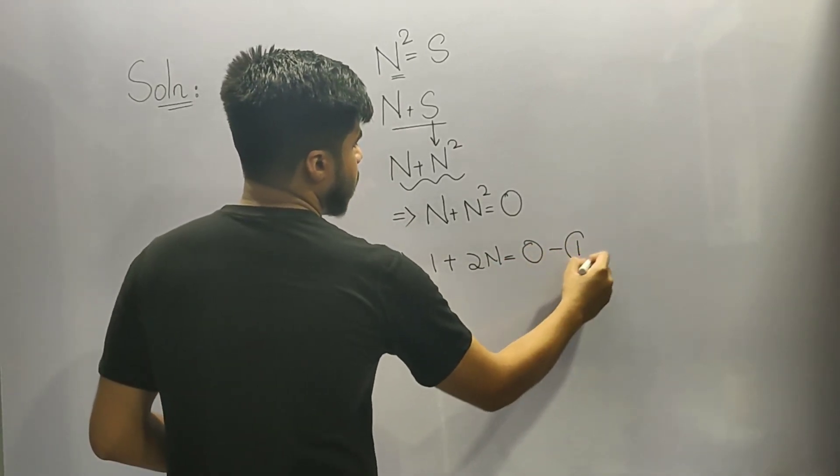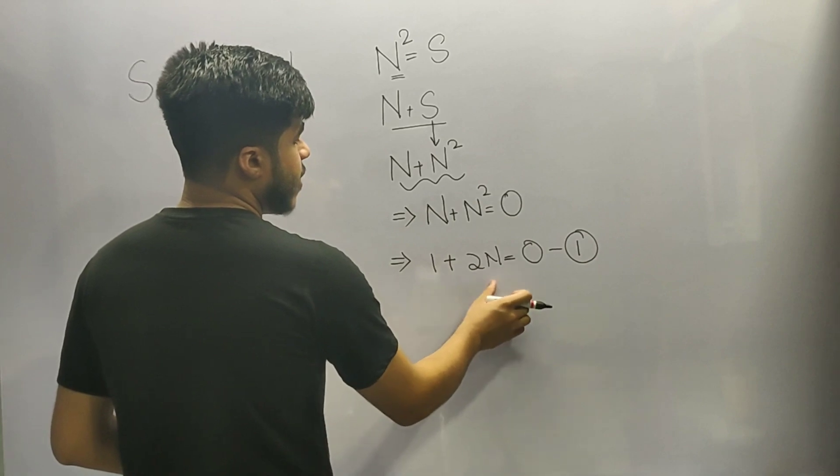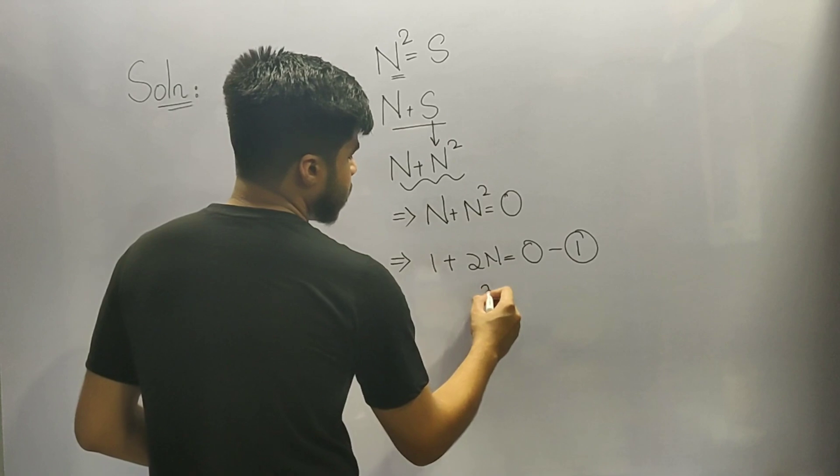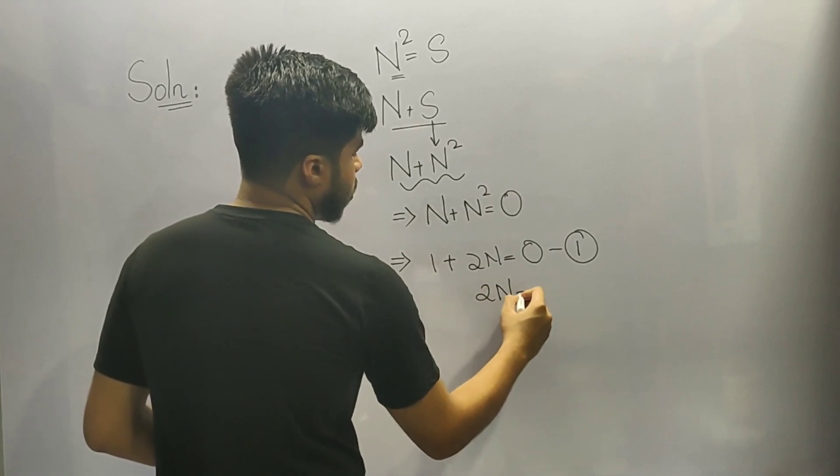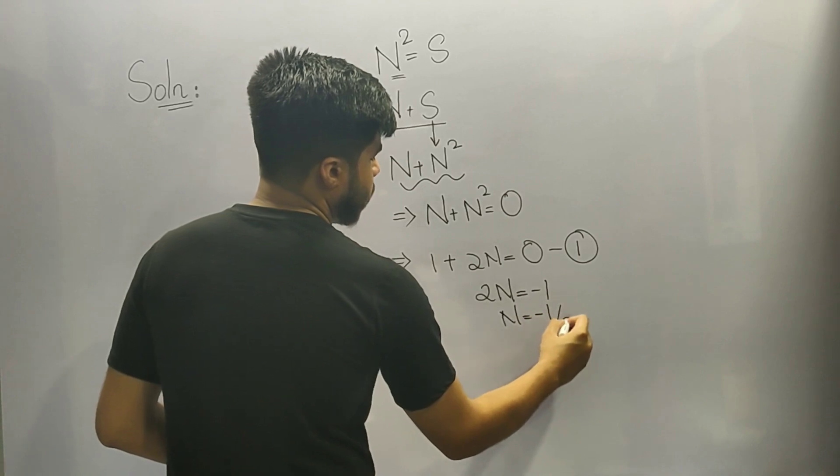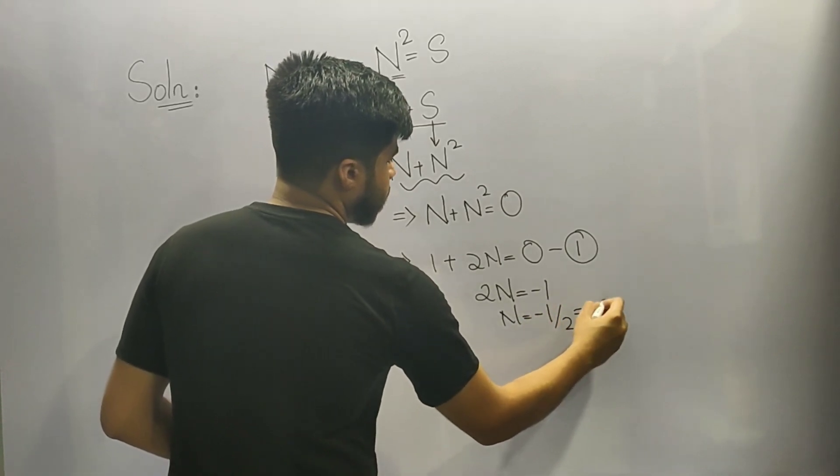Let's name it equation number 1. In equation number 1, we are left only with one variable that is n, so we can easily calculate it by equating it. So we will get 2n is equal to minus 1, and n is equal to minus 1 by 2 or minus 0.5.